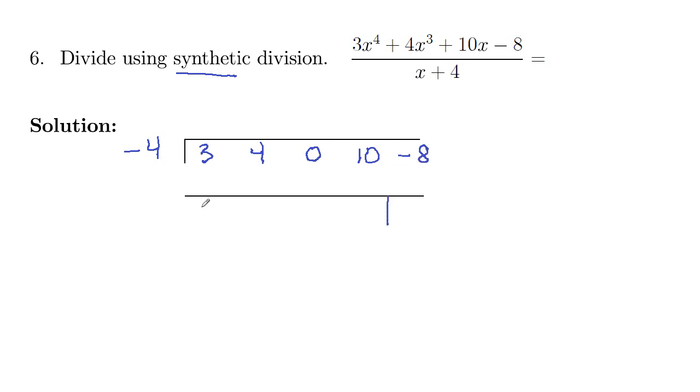So the 3 comes down. 3 times negative 4 is negative 12. We put that in the next column, and then we add. So 4 and negative 12, negative 8.